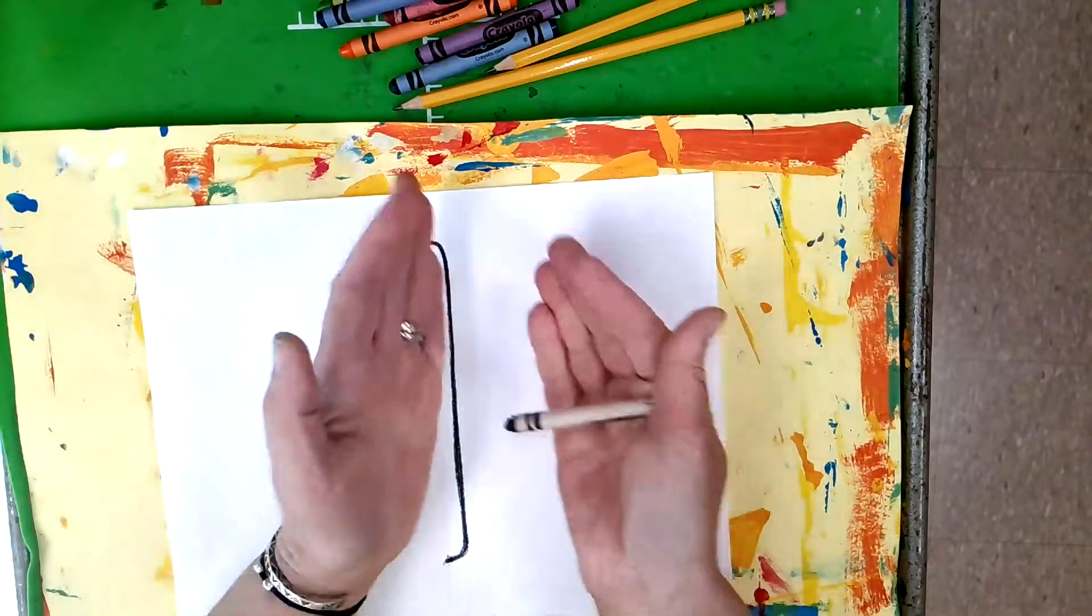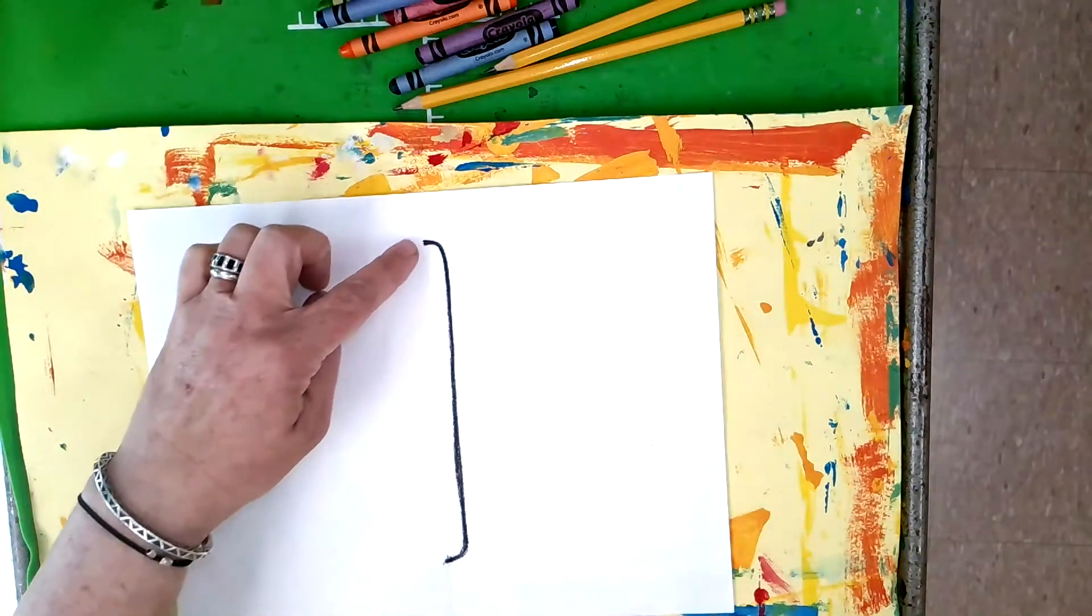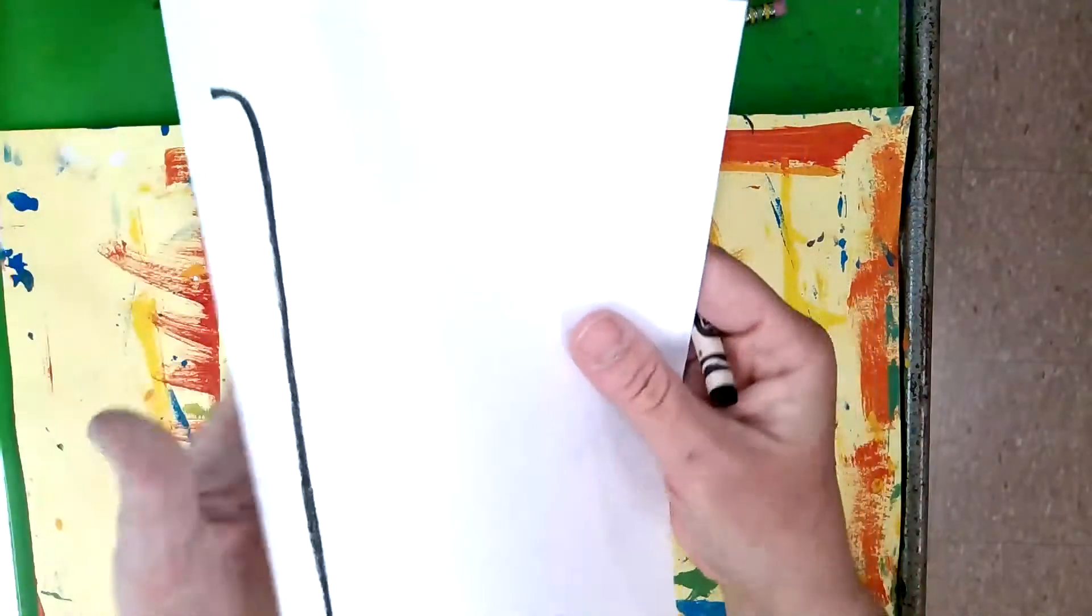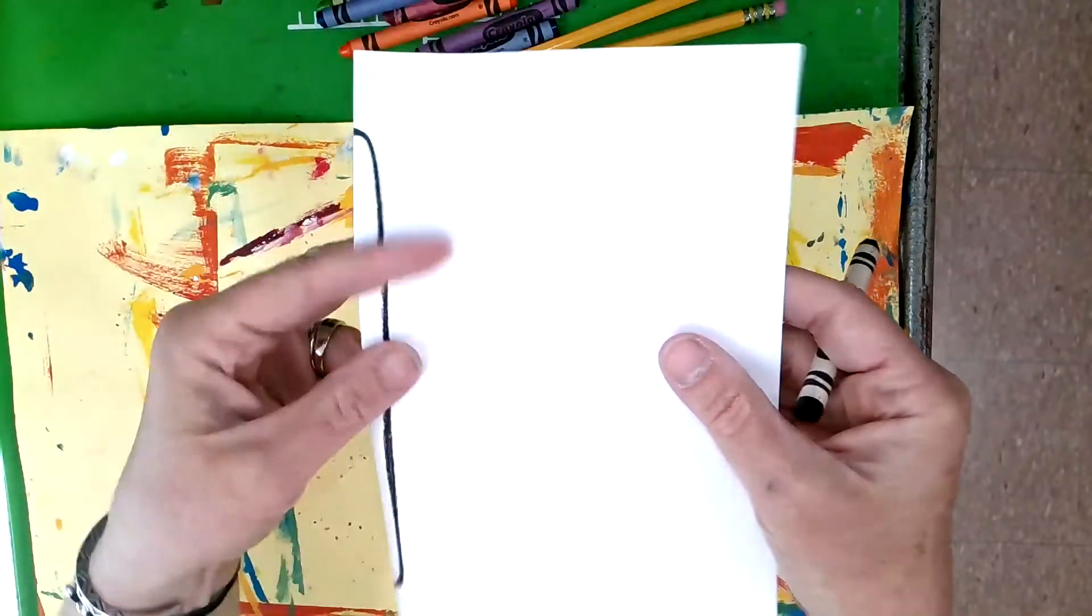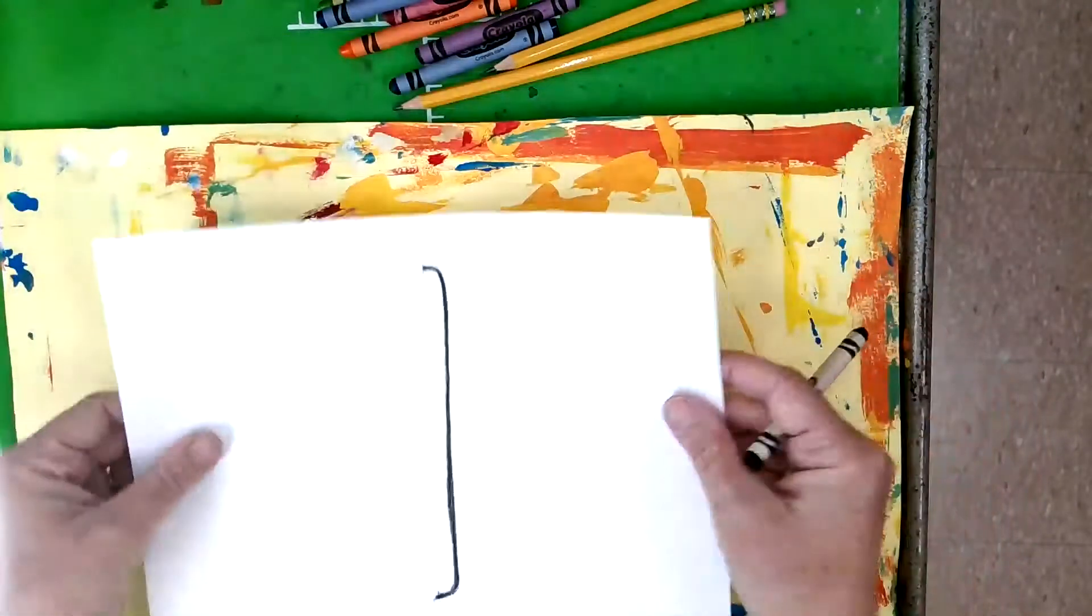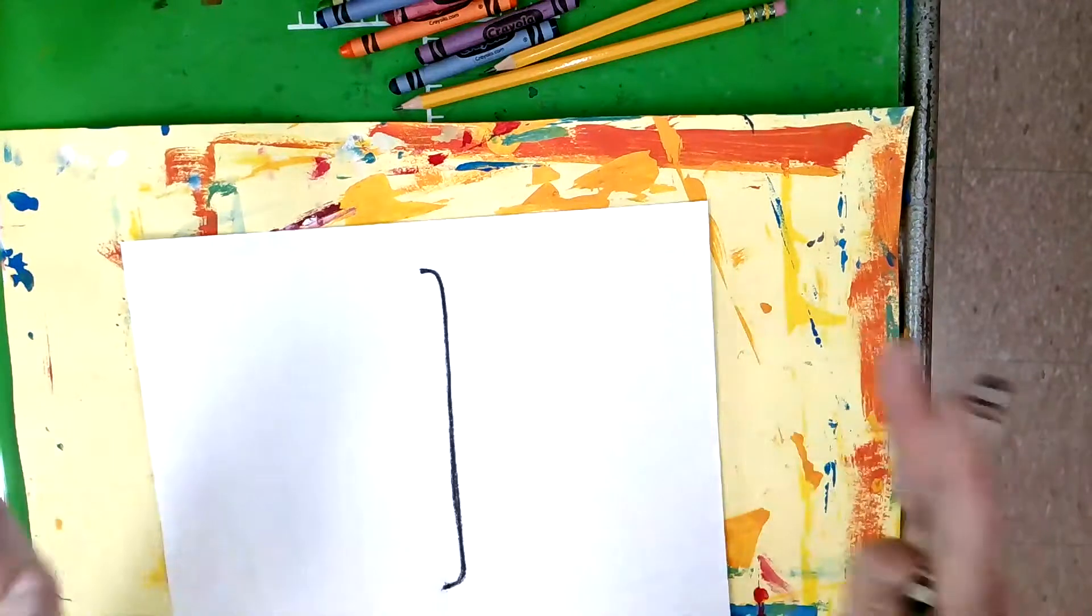It kind of looks like a backward C that's been really stretched out. That's going to be the body of my butterfly. Right now it's just half of the body. I'm going to draw that right on the fold. You see how I drew that right on that fold line?